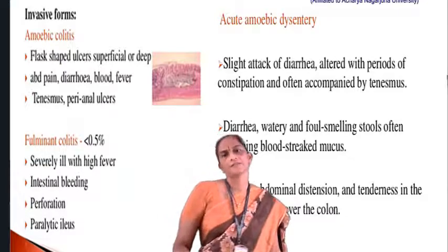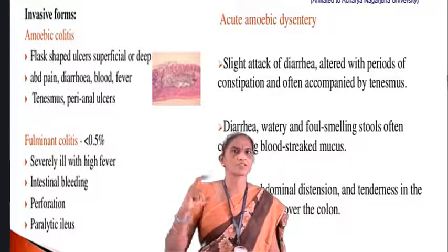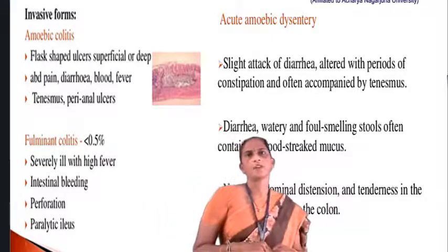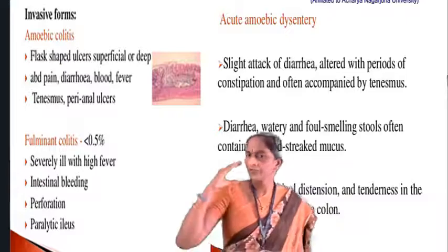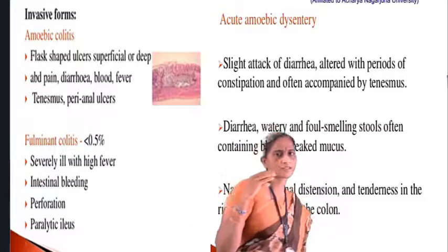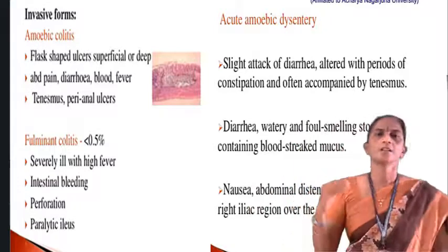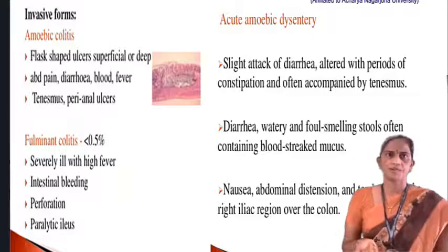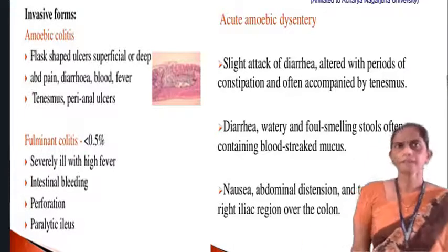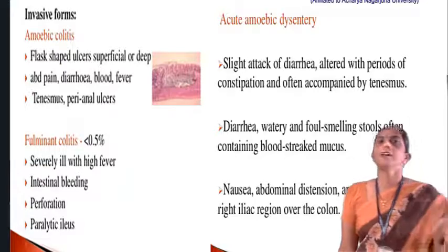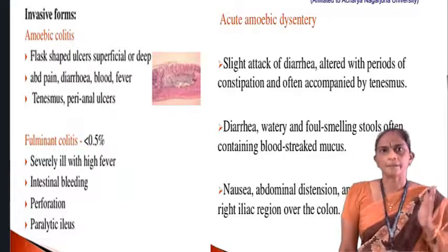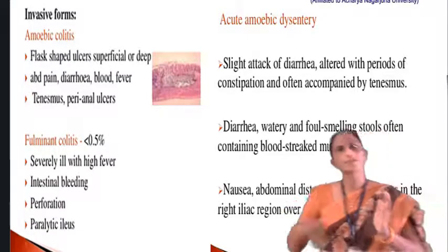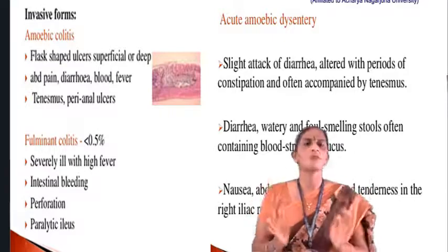The life cycle starts with quadrinucleate cysts, which consist of four nuclei. Transmission occurs through contaminated food and water. The cyst wall is very resistant to intestinal juice, so it directly enters the body and undergoes excystation and encystation. The life cycle is: cyst to trophozoite, and trophozoite back to cyst — a simple cycle.